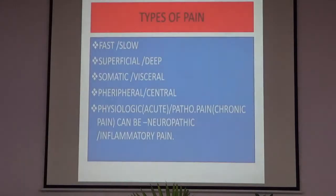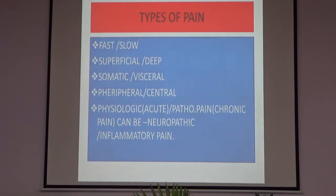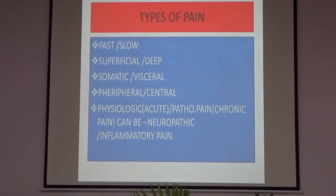Coming to the types of pain: pain can be classified as fast pain, slow pain, superficial pain, deep pain, somatic pain, visceral pain, peripheral pain, central type of pain, physiologic (that is acute pain), or pathological pain which is chronic pain. Chronic pain can be further divided into neuropathic pain and inflammatory pain. Neuropathic pain results from nerve damage, while inflammatory pain — for example — occurs in conditions like rheumatoid arthritis.